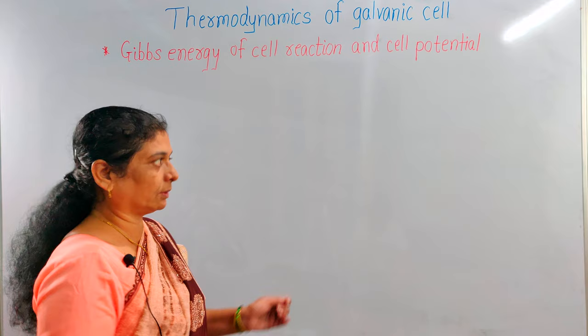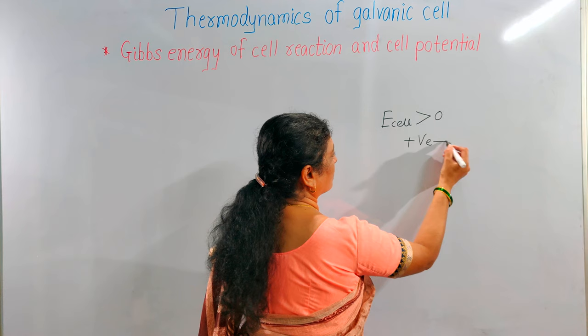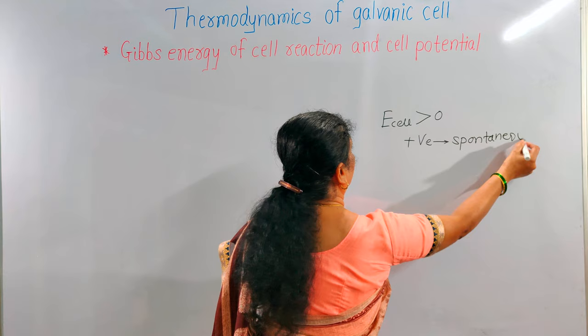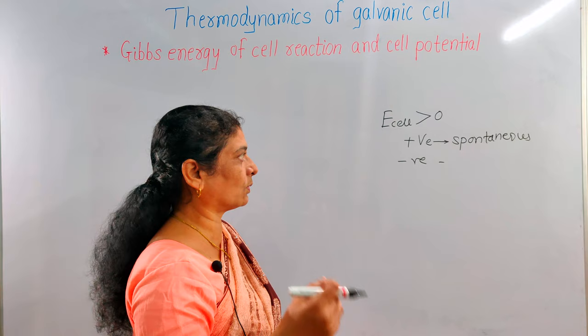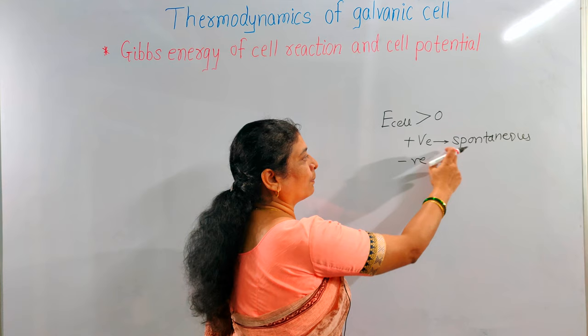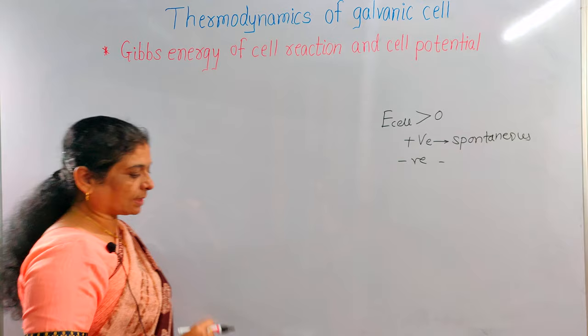Cell potential, denoted as EMF of a cell (E_cell), works similarly. If the value of E_cell is greater than zero, that is, if the EMF is positive, then the reaction is spontaneous. If it is negative, the reaction is non-spontaneous. The redox reaction taking place in a galvanic cell determines whether E_cell is positive or negative.